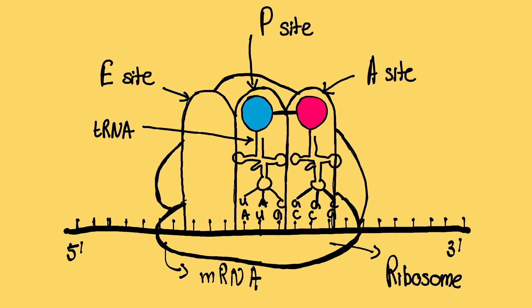The peptidyl transferase enzyme removes the growing amino acid chain from the tRNA molecule in the A site of the ribosome and adds it to the amino acid attached to the tRNA in the P site. In this case, the growing amino acid chain is the functional group transferred by the peptidyl transferase.